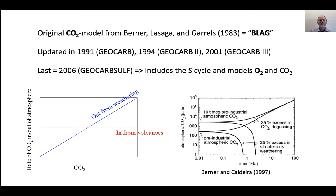I wanted to go over some of the basics of the Berner, La Saga, and Garrels model called the BLAG model. They proposed this in 1983, and then Rob Berner updated it in 1991, called it GEOCARB, then in 1994 called GEOCARB 2, and then the latest version is 2001 called GEOCARB 3. That's the paper we're going to be reading.